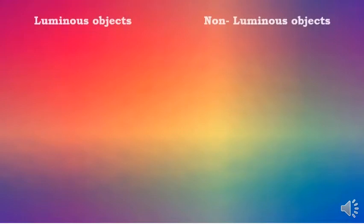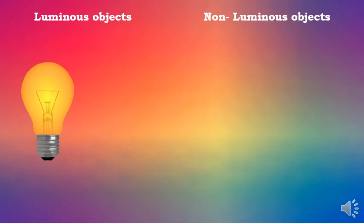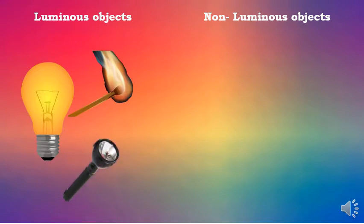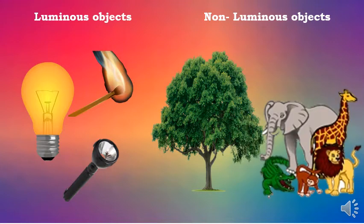Here we will see types of objects. One is luminous and another is non-luminous. Luminous objects are those which emit light — they are themselves a source of light. Examples are a bulb, matchsticks, and a torch. Non-luminous objects are not sources of light themselves — trees and animals do not emit light, so those are non-luminous objects.